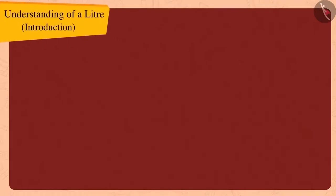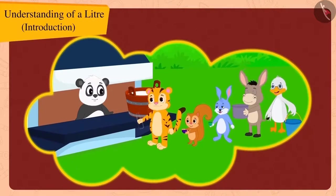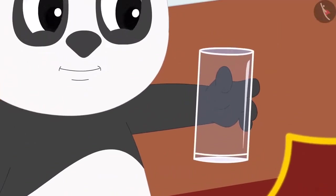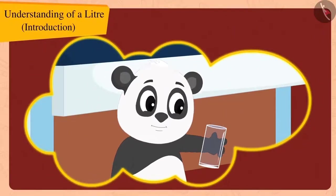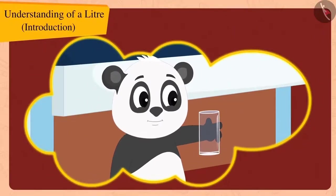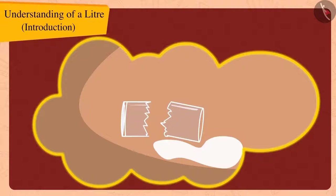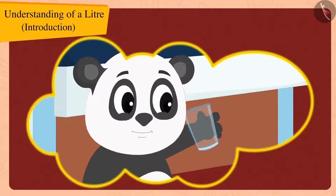Children, do you remember the long line outside Golu's dairy? Golu was very easily selling milk to all the people using his glass up till now. But suddenly, his glass broke yesterday and he had to buy a new glass.